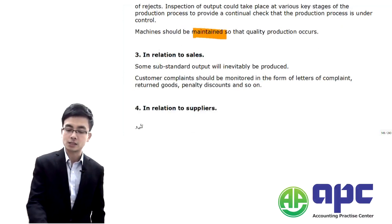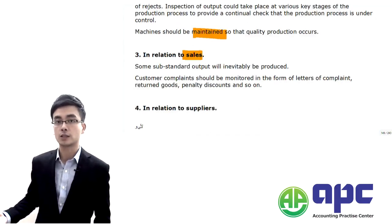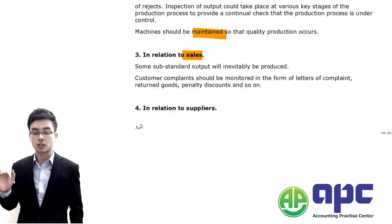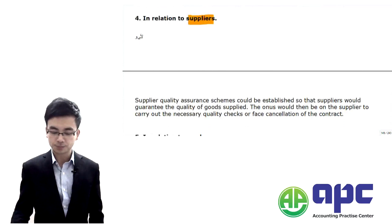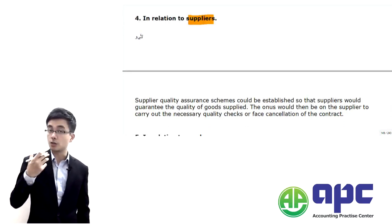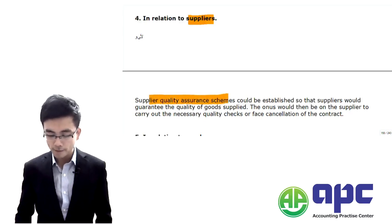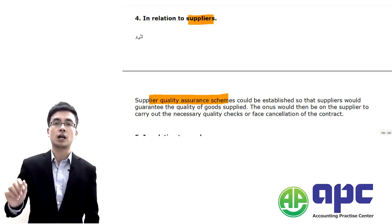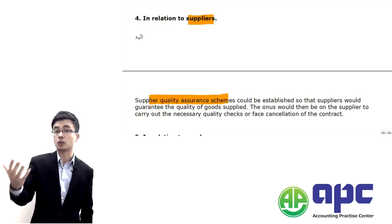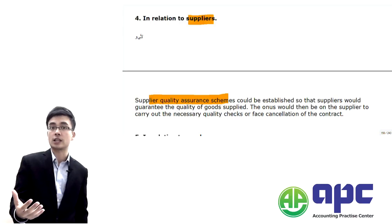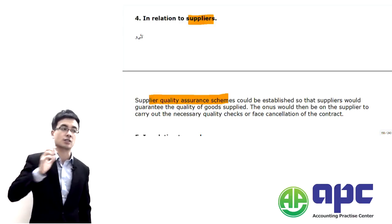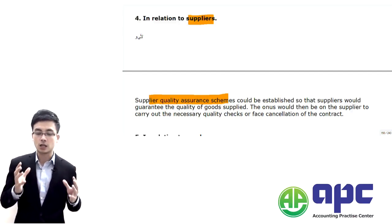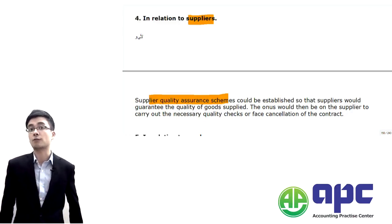Getting things right also relates to sales — if the customer doesn't like your product and you get that feedback instantly, you will redevelop and provide the correct parts to the customer again. And it relates to suppliers too: you have to set up a Supplier Quality Assurance Scheme when selecting which supplier you want, to make sure all suppliers provide products with the agreed quality standard. You cannot select a supplier that provides low-quality products.